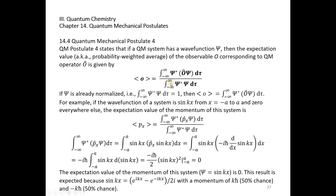On the bottom, we have the integral of psi star psi d tau. Psi star is the complex conjugate of psi. If psi is real, then psi star is equal to psi. If psi is already normalized, then the integral of psi star times psi is just 1. Then the expectation value of the observable O is equal to the integral of psi star times O psi d tau.